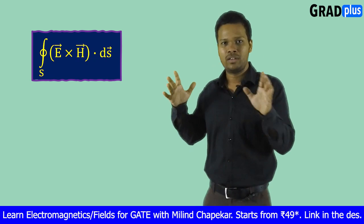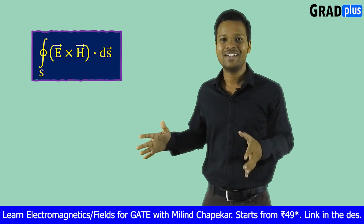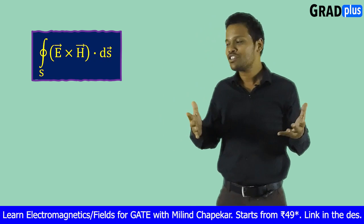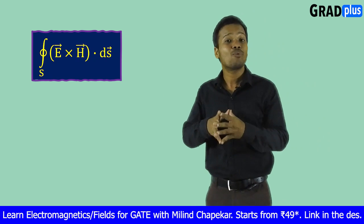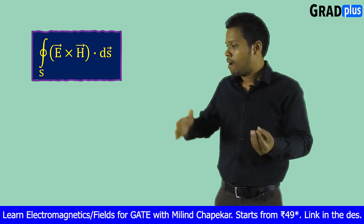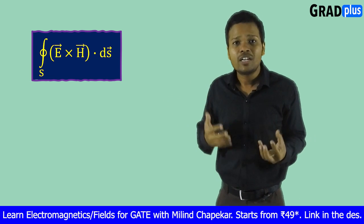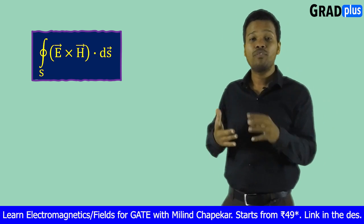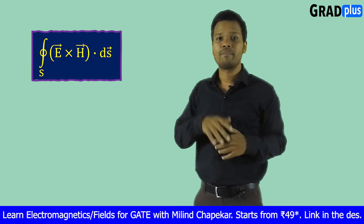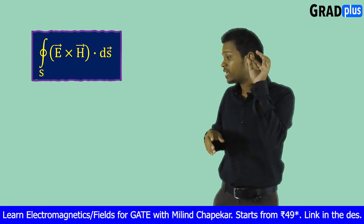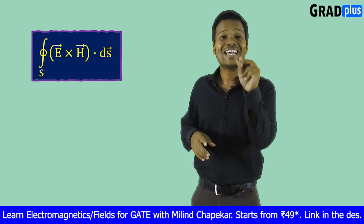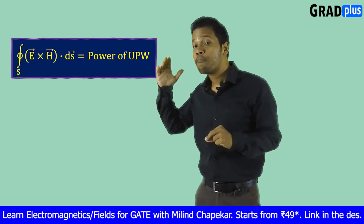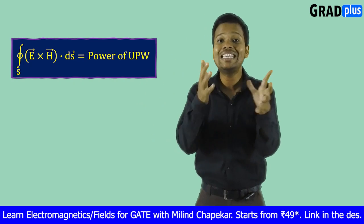I cannot include the complete procedure here because that is not the title of our video. But in the derivation of the Poynting theorem and Poynting vector, we have seen that by step-by-step analytical treatment starting from Maxwell's equations, we can conclude that the surface integration of E cross H is analogous to the power of the uniform plane wave — the power carried by the EM wave.